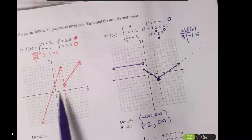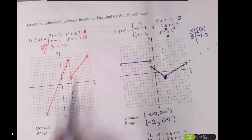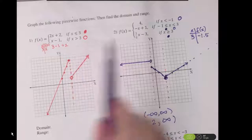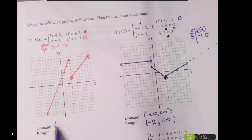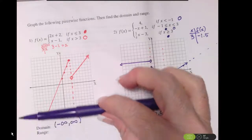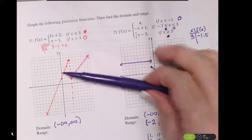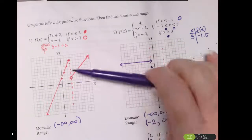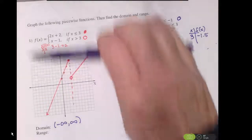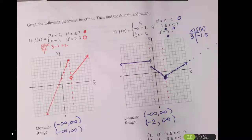Let me go back and just do the domain and range on problem number 1. From left to right, my function is continuously defined, and my range goes from negative infinity. Because there's a clear overlap here, I've got values of y all the way up through infinity as well. So the range is all real numbers on that one.